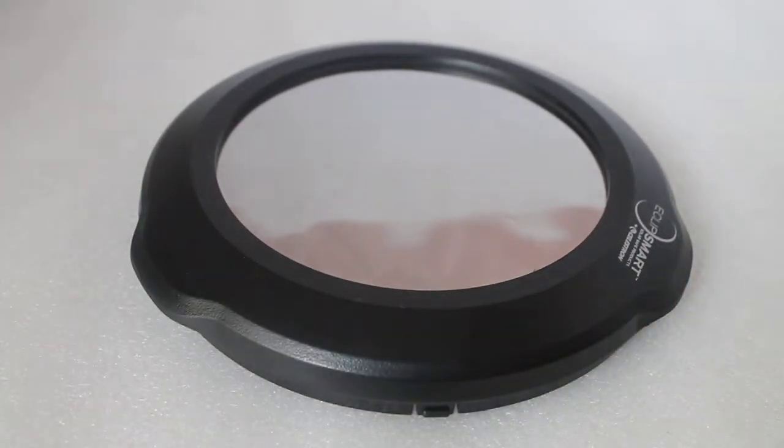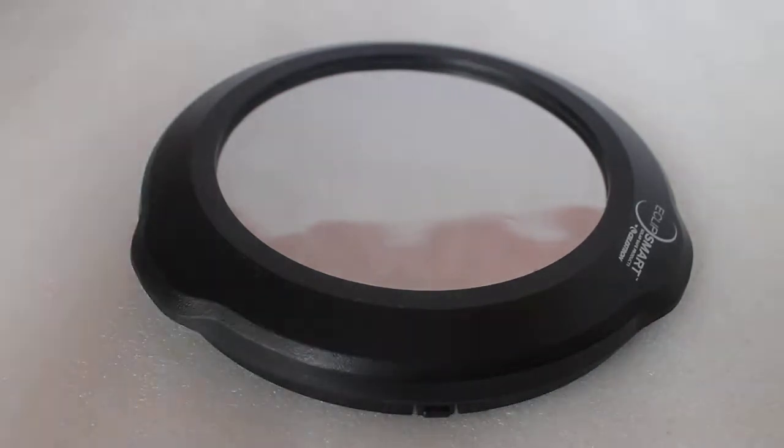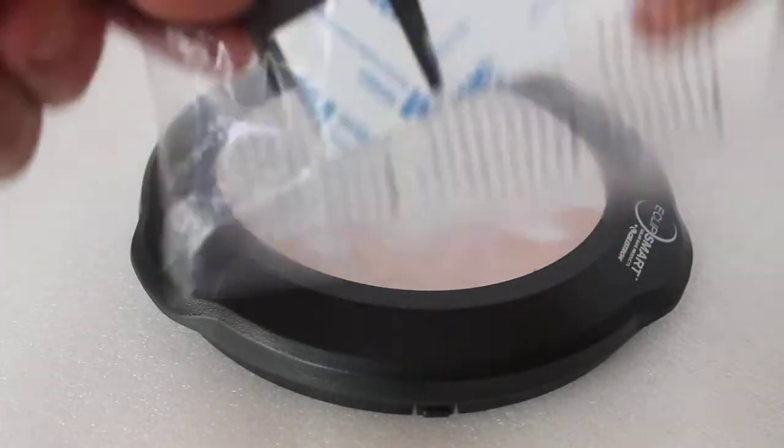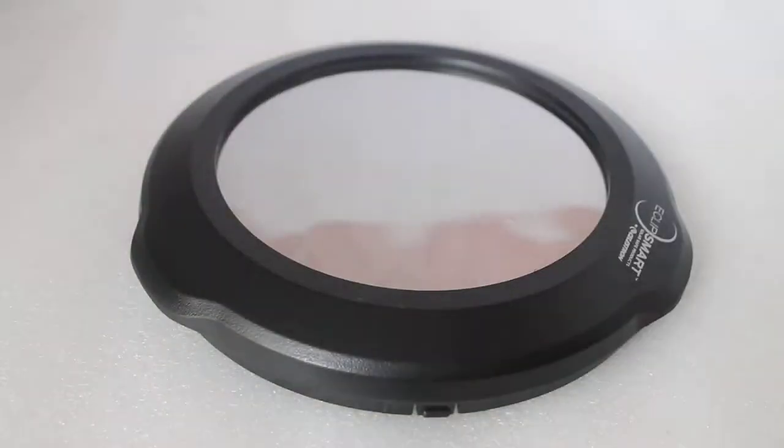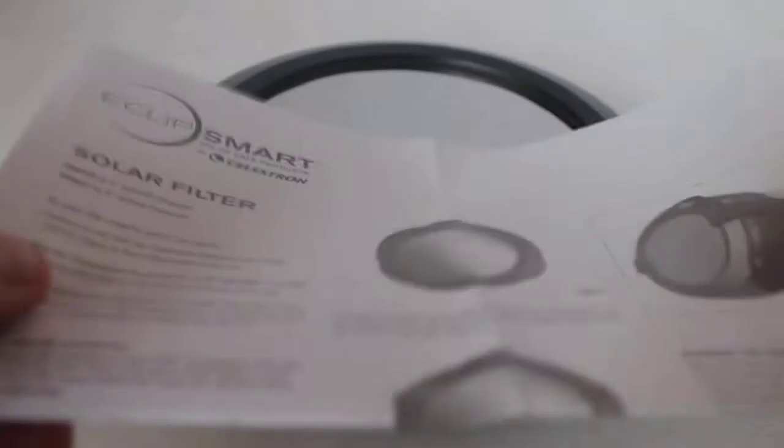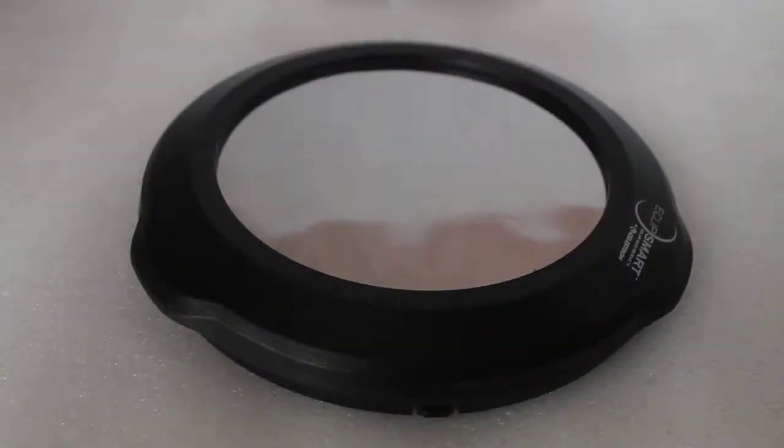This is for the 6 inch schmidt cassegrain only. It comes in a plain box as standard with a couple of velcro straps to keep it secure and the all-important instructions which you must read.